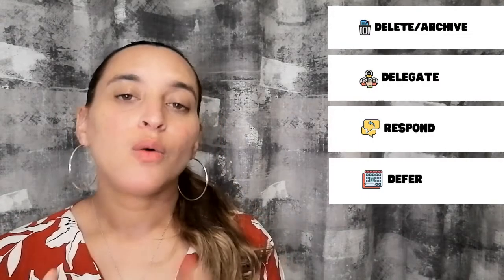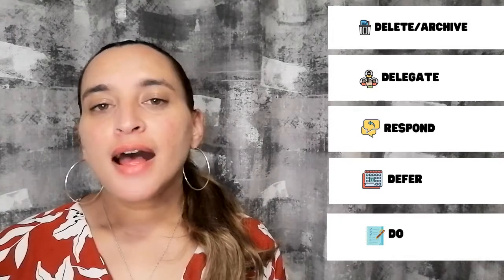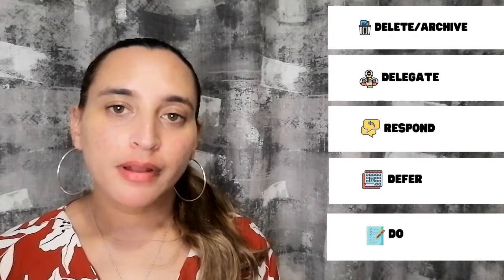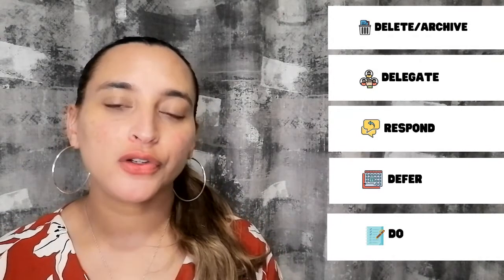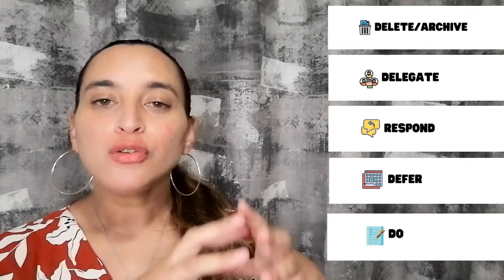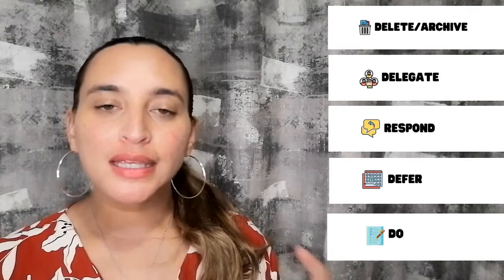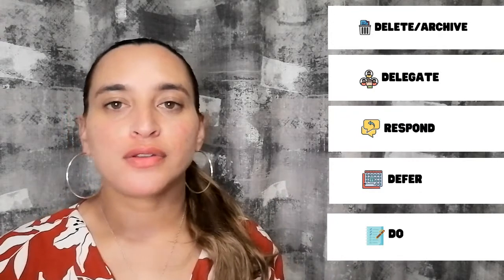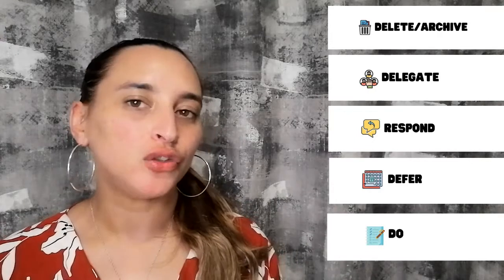Merlin Mann identified five actions that you can take on an email: you can delete or archive, you can delegate, you can respond, you can defer, or you can do. These are the five actions you can take for each email in your inbox, but how you execute on those actions — or how you set up your email to execute on them — will depend entirely on your unique personality type, your information processing preferences, and even your sensory style.